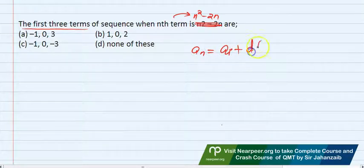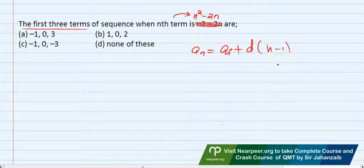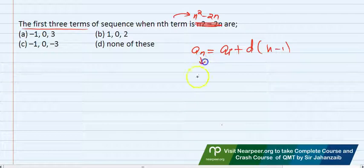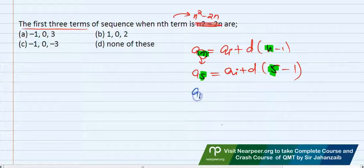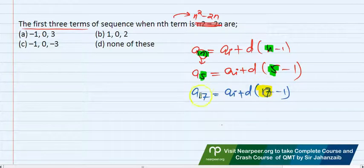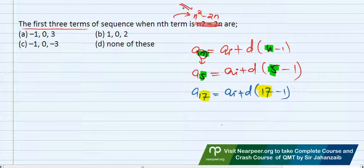You know that you have the nth term formula, for example in arithmetic sequence. The nth term formula is given first term plus d into n minus 1. You put in the index. If you have the nth term formula, this is the general formula, this is the general term, and you can put anything in this way.